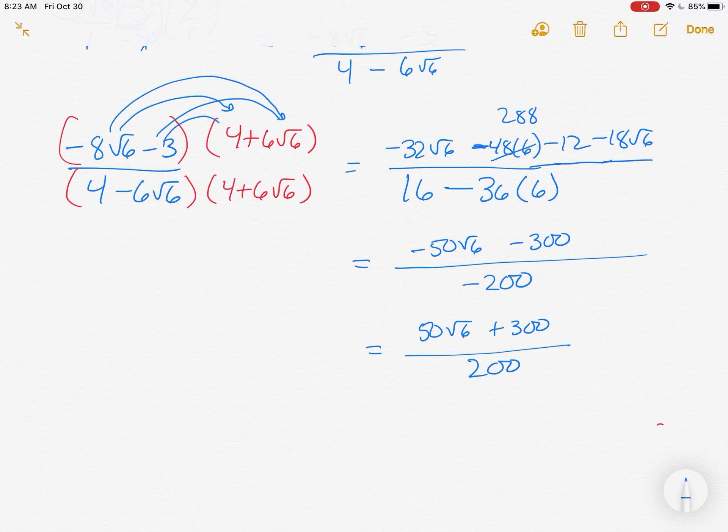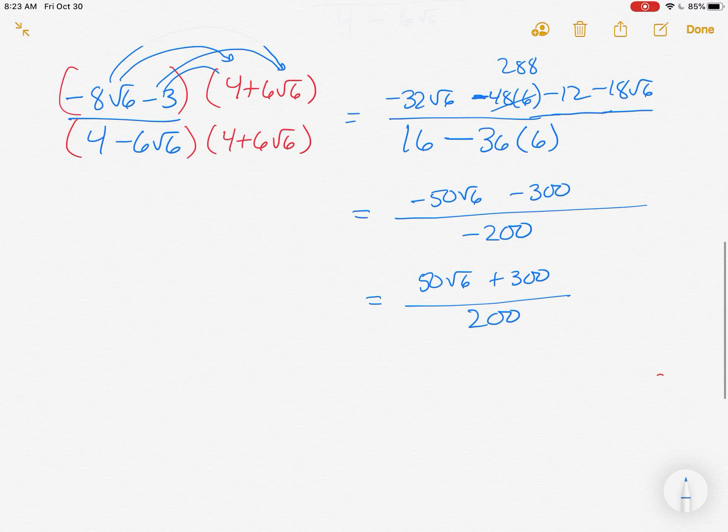Now what am I going to do? I'm going to pull out the common factor of 50 and get root 6 plus 6 all divided by 100, which matches that answer.